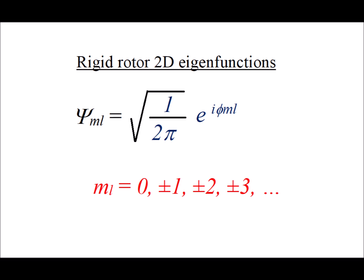Where i is the imaginary number, φ is the angle that the particle makes with the center as it follows around the ring, and m sub l is the quantum number. And the m sub l's are going to be integers, so it's 0 plus or minus 1 plus or minus 2 plus or minus 3 and so on.